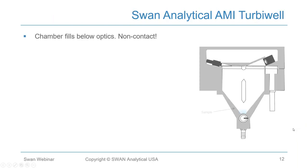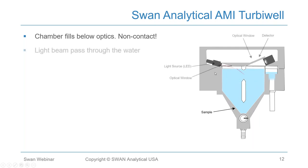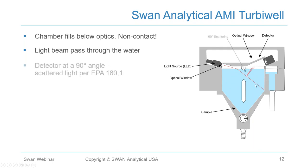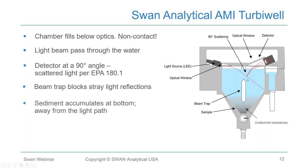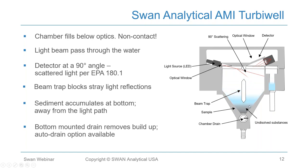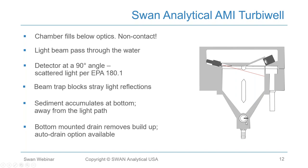The Swan turbidimeter chamber fills below the optics so they never contact the water. The LED light source sends light into the water, which is refracted and measured at a 90-degree incidence angle by the detector. A beam trap prevents light from bouncing around and being read by the detector again. Particulate matter is trapped in the bottom of the instrument and easily removed when the instrument is drained via the bottom-mounted drain. An auto-drain option is also available.